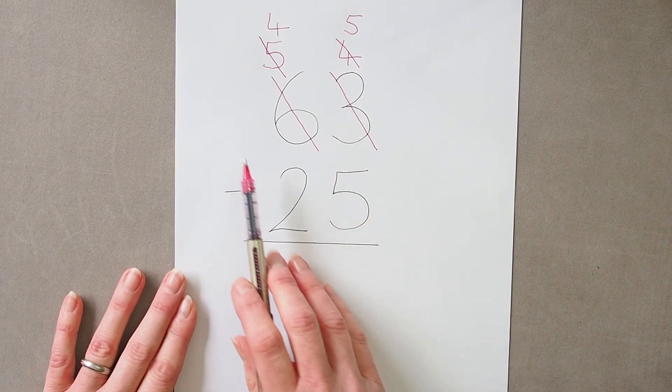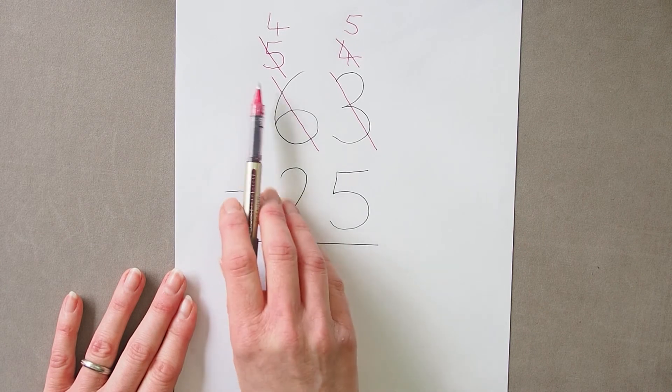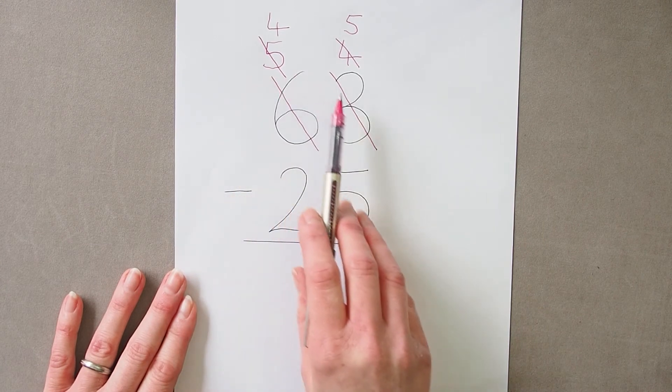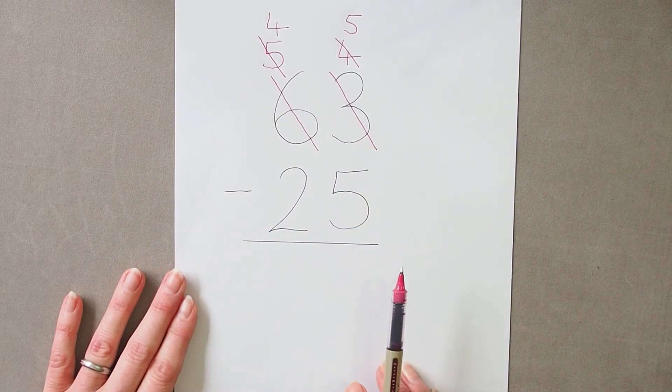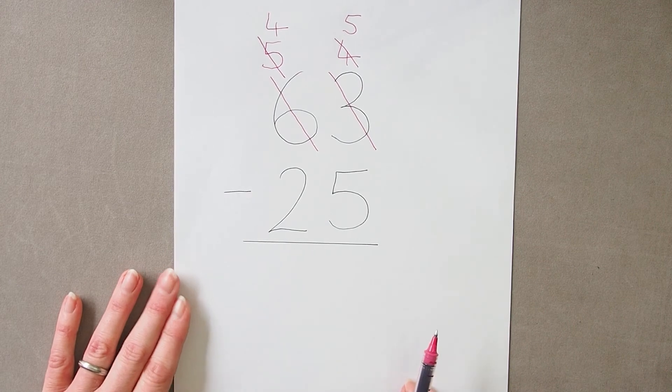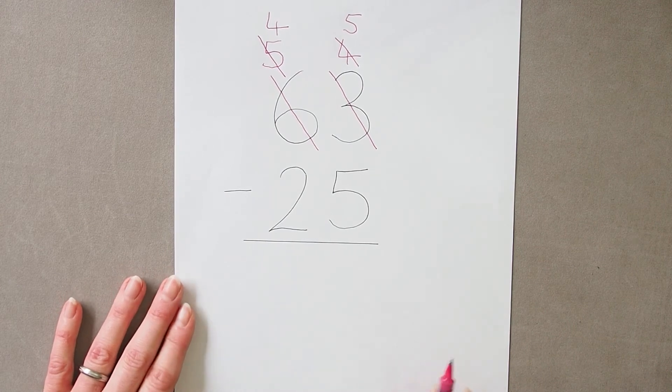So pupils need to be secure with the knowledge that this is a ten going into a units column, so it cannot be added on as a one, and using base ten equipment can reinforce this.